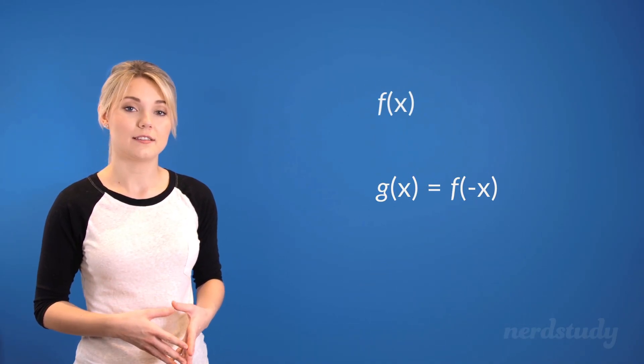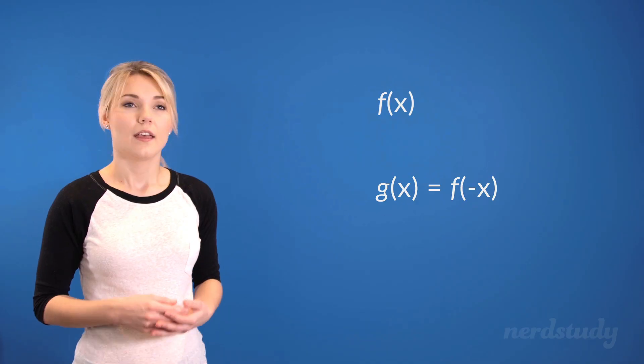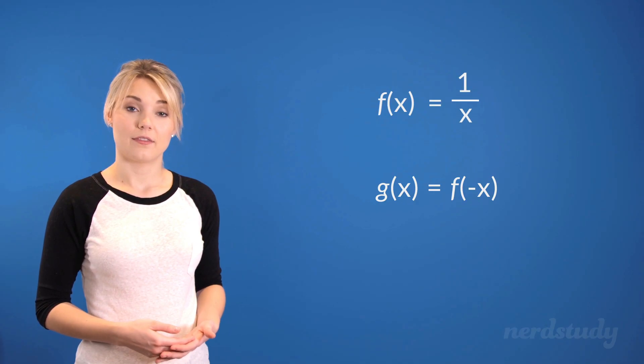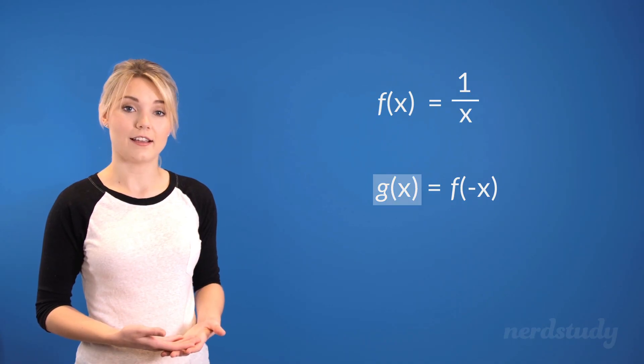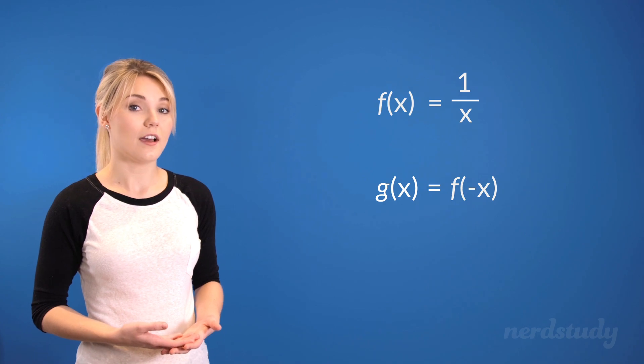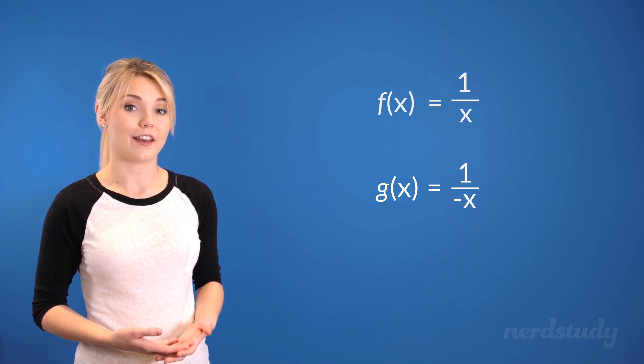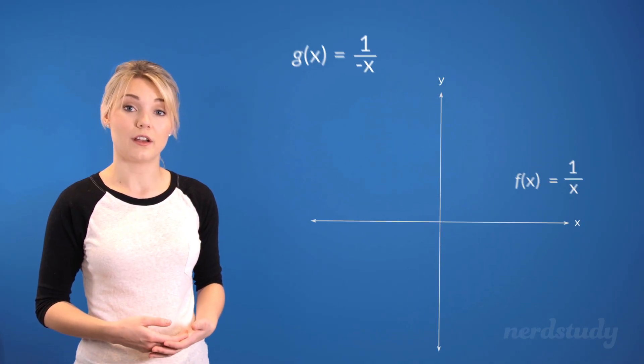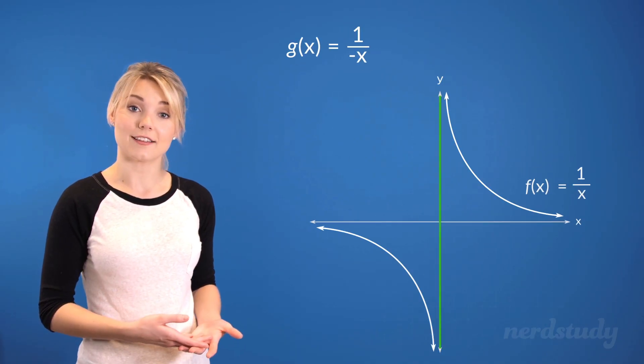Let's put some numbers into this and try some examples. Let's say that f(x) was equal to 1 over x. Then, since g(x) is equal to f(-x), we'd get g(x) is equal to 1 over negative x. This negative sign applied to the x would result in a reflection along the y-axis.